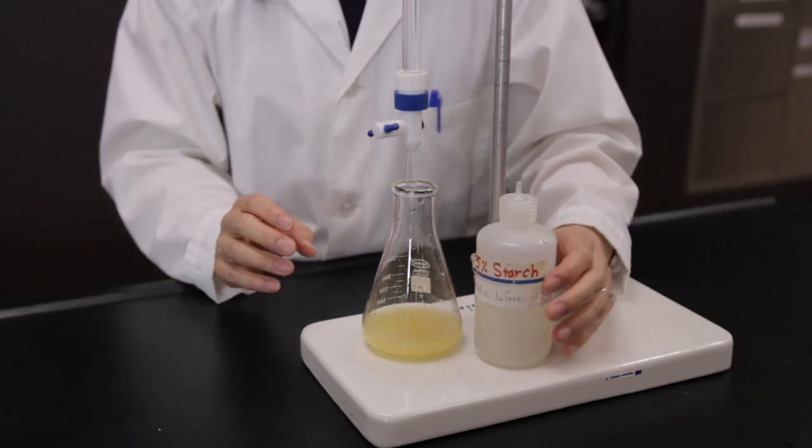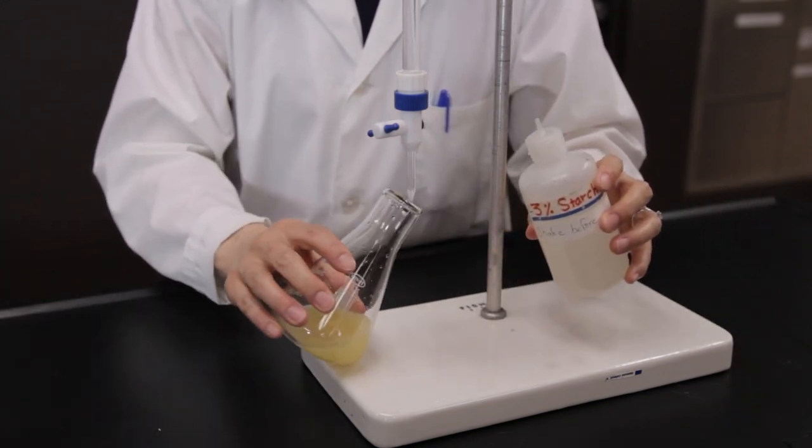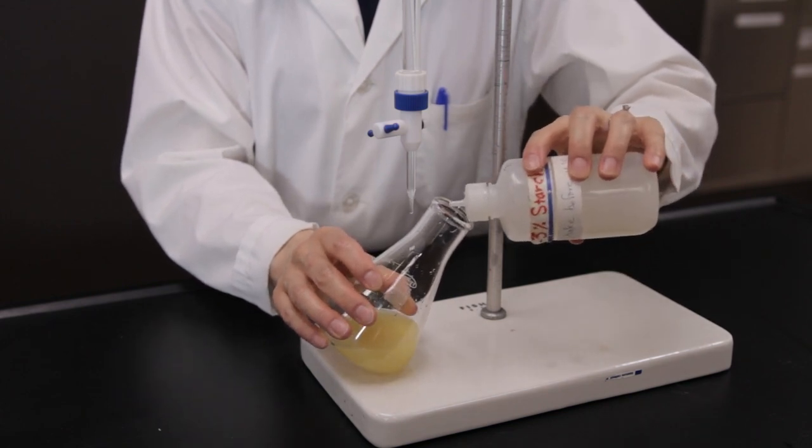When the solution color fades to a light yellow or beige, stop the titration and add about five drops of the three percent starch solution.